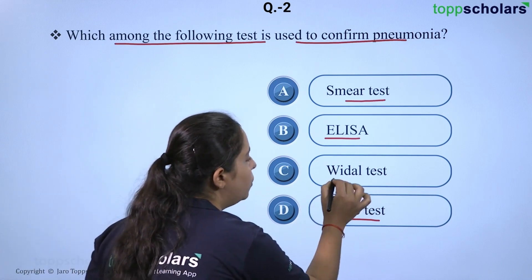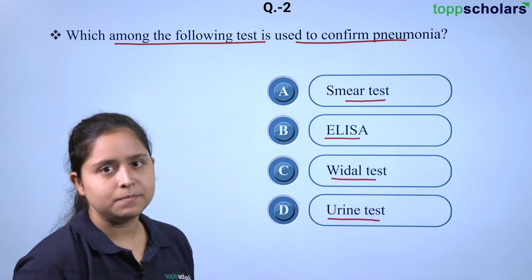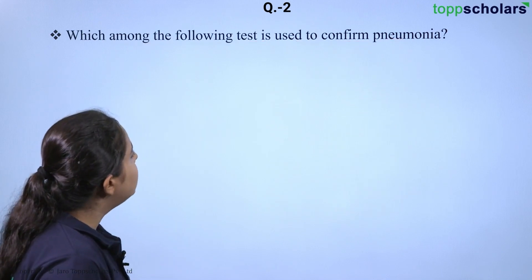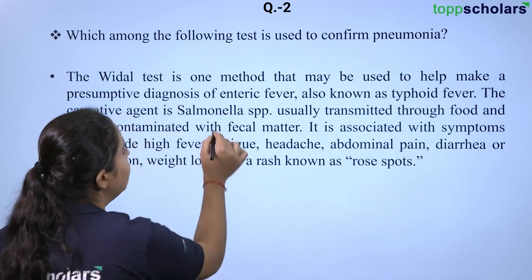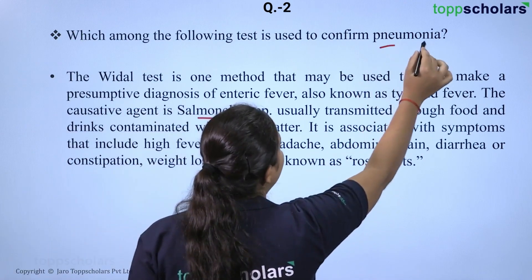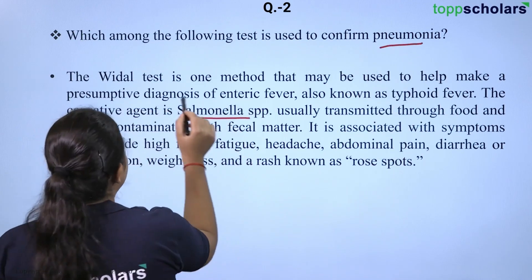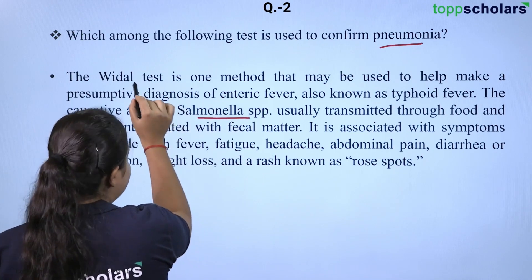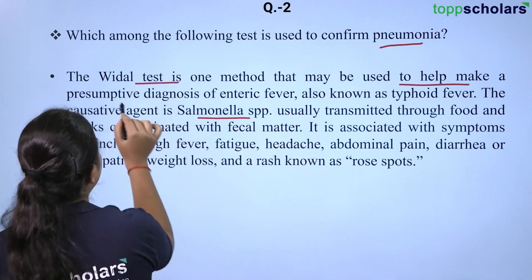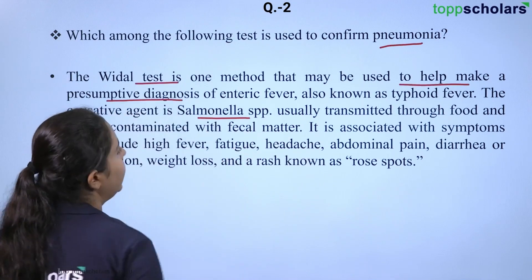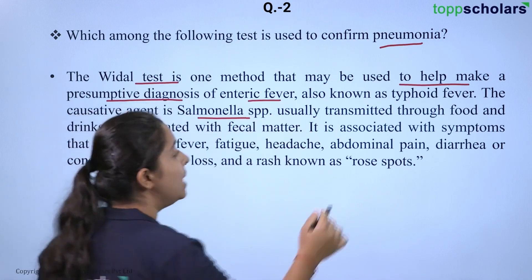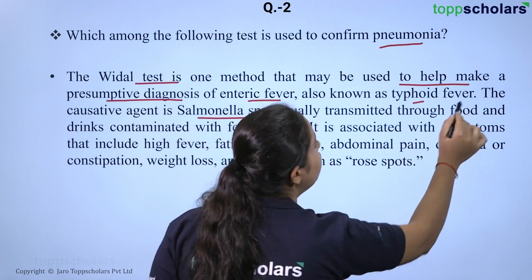Now, what do you know about the Widal test? The causative agent Salmonella is causing this condition. The Widal test is one of the methods used to make a presumptive diagnosis of enteric fever, which is also known as typhoid fever.